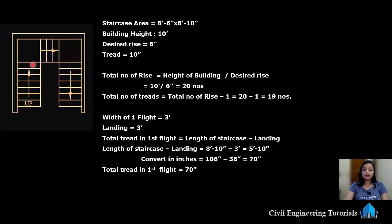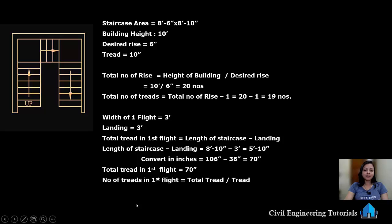So we have got total number of rises, total number of treads, and total tread length in one flight. Both the parallel flights are same — we have 3 flights. Number of treads in one flight equals total tread length divided by one tread. So, total tread is 70 inches divided by tread 10 inches, giving us 7 numbers of treads in one flight.